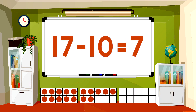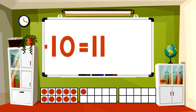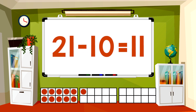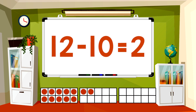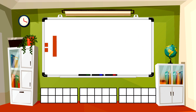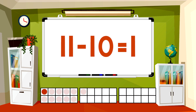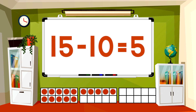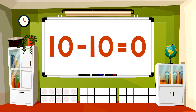17 minus 10 equals 7. 21 minus 10 equals 11. 12 minus 10 equals 2. 11 minus 10 equals 1. 15 minus 10 equals 5. 10 minus 10 equals 0.